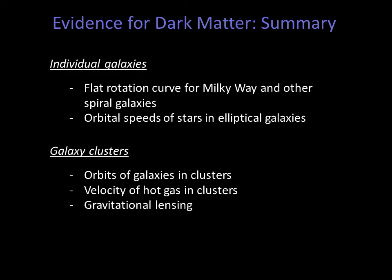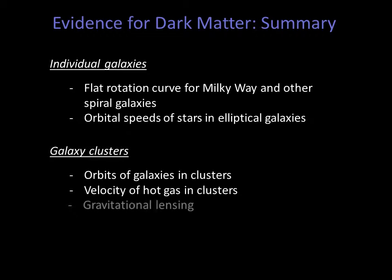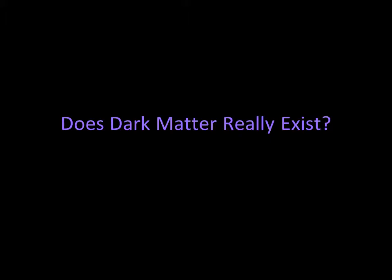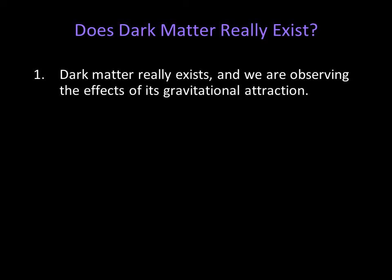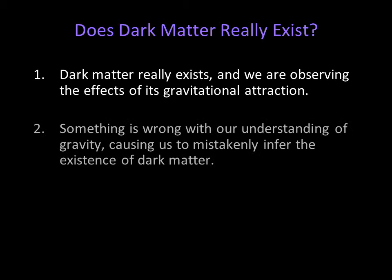It seems there's ample observational evidence for dark matter, both in individual galaxies and in galaxy clusters. But perhaps there's another solution — what if our understanding of gravity is wrong? Does dark matter really exist? We therefore have two options: either dark matter really exists and we are observing the effects of its gravitational attraction, or something is wrong with our understanding of gravity, causing us to mistakenly infer the existence of dark matter. Physicists are seriously looking into the latter — it's called MOND, Modified Newtonian Dynamics. Nevertheless, gravity has been so well tested that most astronomers prefer option one.